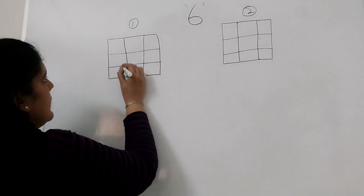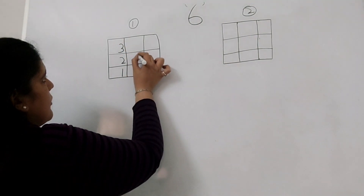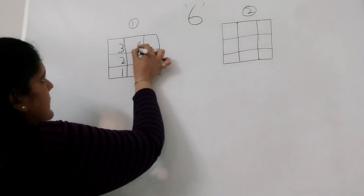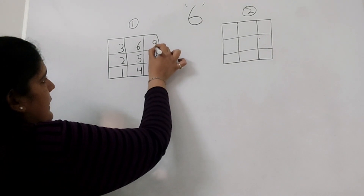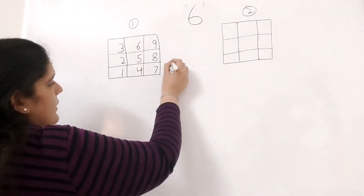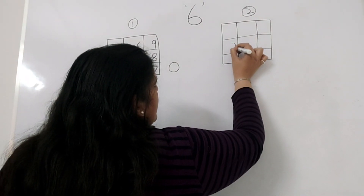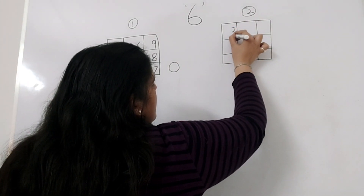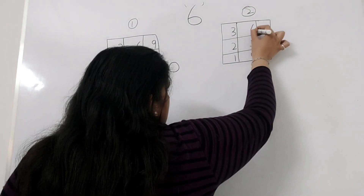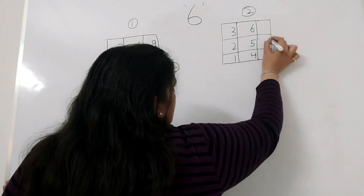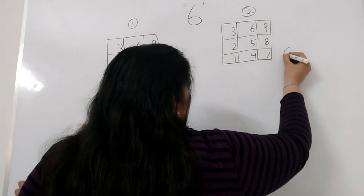That is 1, 2, 3, 4, 5, 6, 7, 8 and 9, and I will place a 0 outside. We will do the same for the next grid: 1, 2, 3, 4, 5, 6, 7, 8 and 9, and I will place a 0 outside.